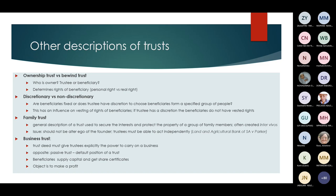Other descriptions of trusts include the ownership trust versus the bevent trust — depending on who is the owner. If the trustee is the owner, it is an ownership trust; if the beneficiary is the owner, it is called a bevent trust. Whoever is the owner determines the rights of beneficiaries: if the beneficiary is the owner, they have a real right over the property; whereas if the trustee is the owner, the beneficiary has only a personal right.